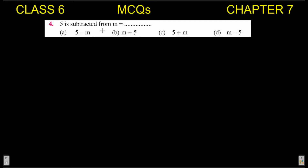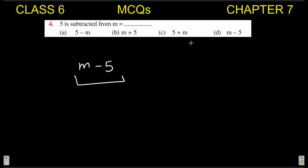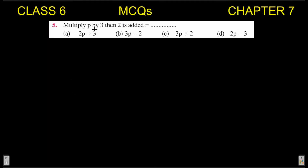Next MCQ: 'five is subtracted from m' — we need to write this as an expression. Writing m first, then subtracting five from m gives us m − 5. Checking the options: not A, not B, not C — m − 5 is mentioned in option D, so D is your answer.